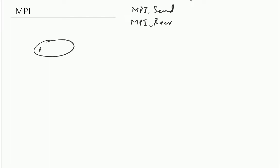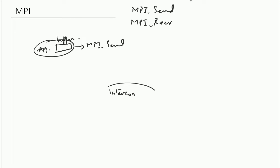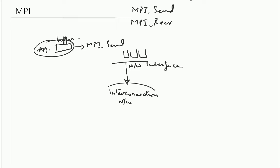This is the application space and in the application space you have allocated some buffer and you want to send the contents of this buffer. So, you call MPI send. Then there is the interconnection network and some network interface. How do these network interfaces work, or the drivers for these? Typically there are some queues that they maintain corresponding to different links connected to the network interface, and they queue up the data that you want to send.